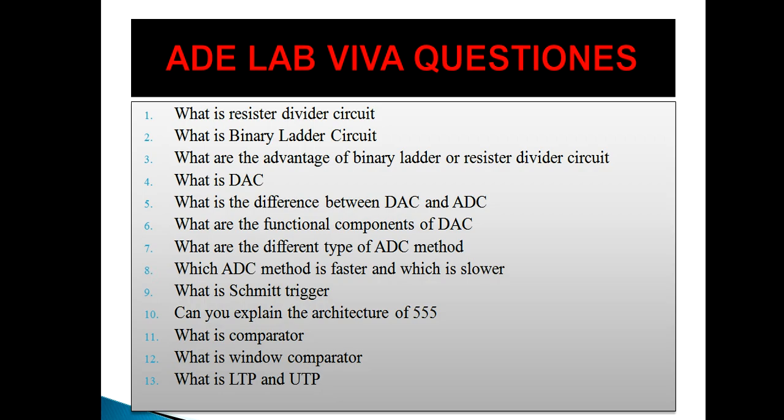What is a resistor divider circuit and binary ladder circuit, and what are the advantages? Both circuits are used to convert digital into analog signal. ADC is the process of converting analog signal into digital signal, and DAC is the process of converting digital signal into analog signal. To convert digital into analog signal we use DAC. The methods used are resistive divider circuit and binary ladder circuit. In resistive divider, you have to use many resistors depending on the number of bits.